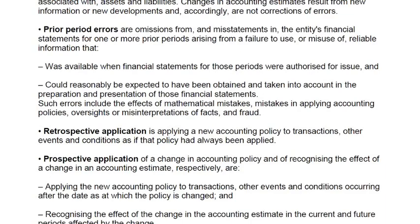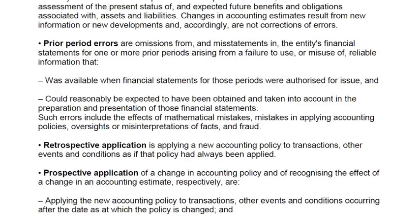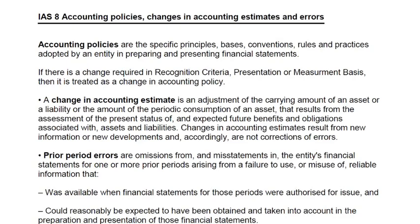This is known as retrospective application. IAS-8 also mentions that if there is impracticability — meaning it is not possible to change the policy going back in time — we need to apply prospective application instead. Another example of a change in accounting policy is changing the measurement basis, for example, previously using the cost method and now using the fair value method for non-current assets. This is also a change in accounting policy.